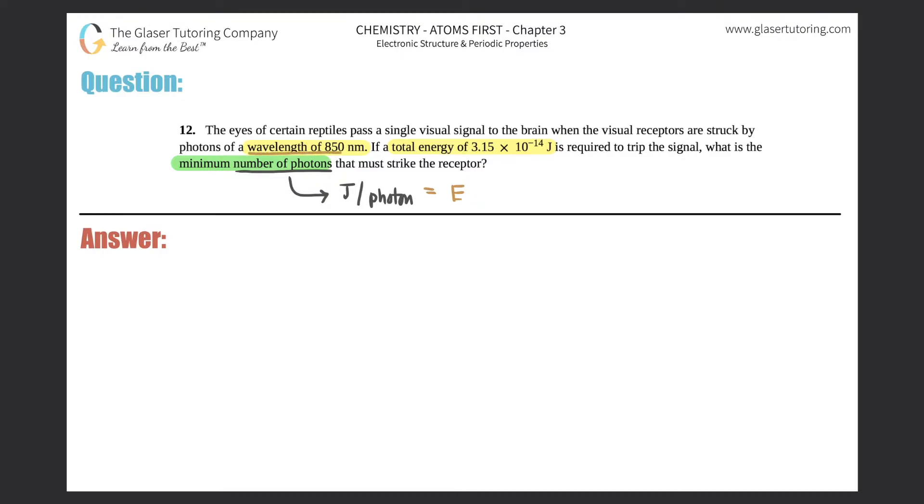And look, they gave us a wavelength of 850 nanometers. So if they gave us a wavelength, which is lambda, 850 nanometers, can I go from a wavelength to energy joules per photon? Yes I can. I know a formula between energy and wavelength is E equals hc over wavelength.